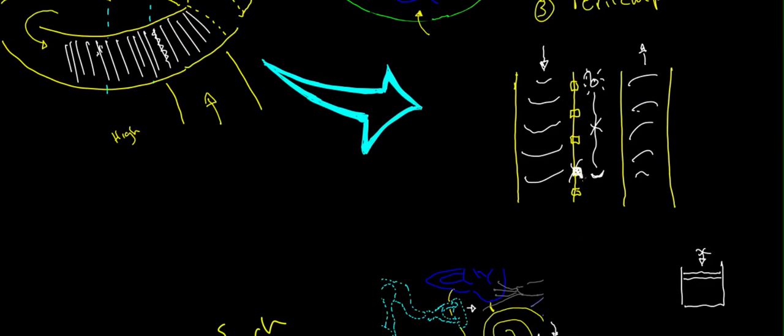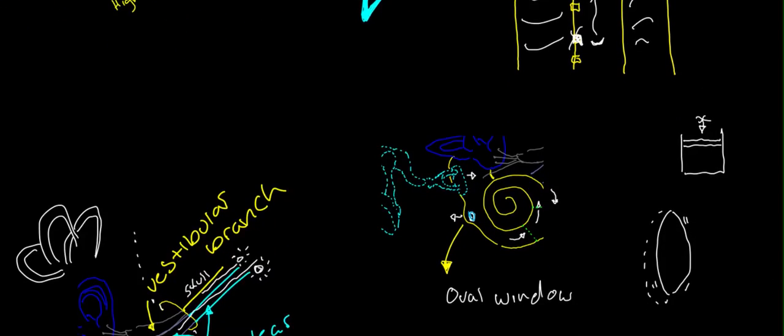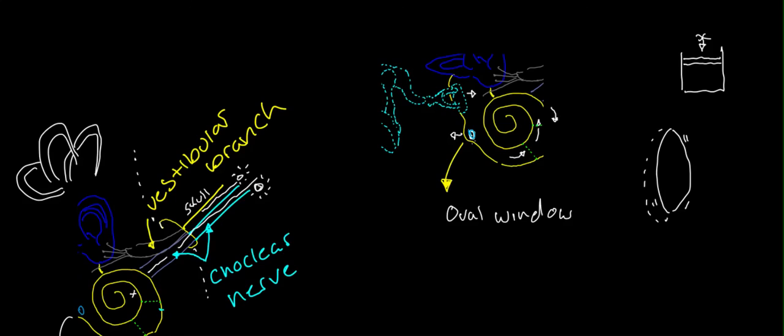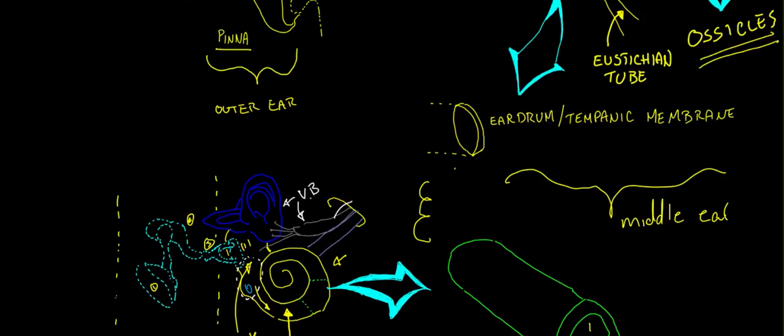And, when those get damaged, the signal can't be sent to the brain, and the sound just comes in and out. And, it's able to exit, the sound is able to exit through the oval window. And, that's pretty much it. So, I hope that helps you guys out.